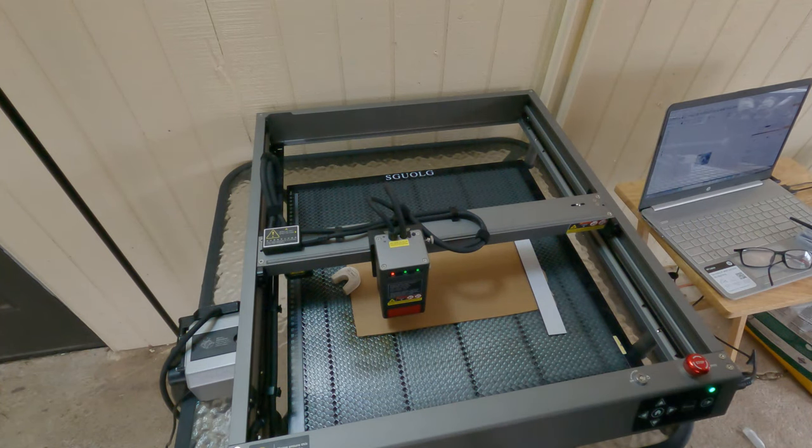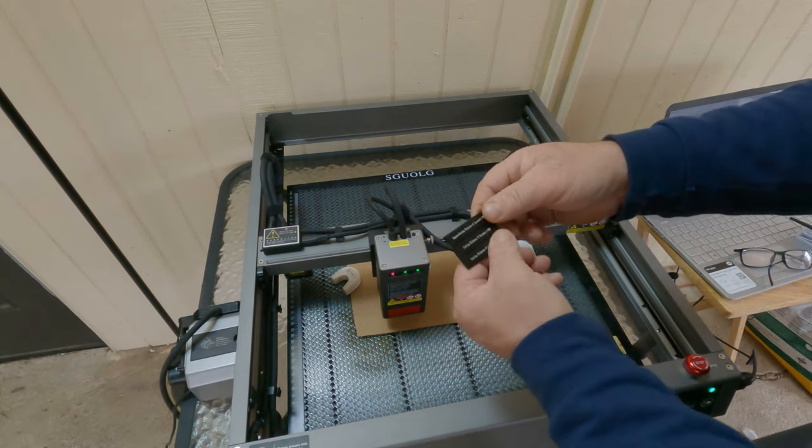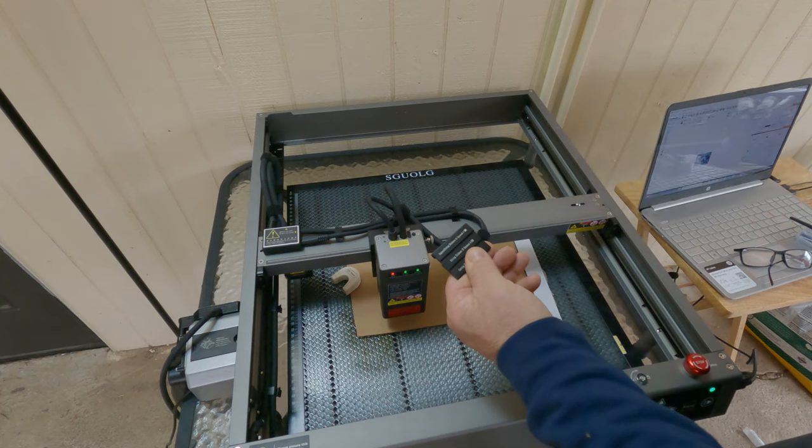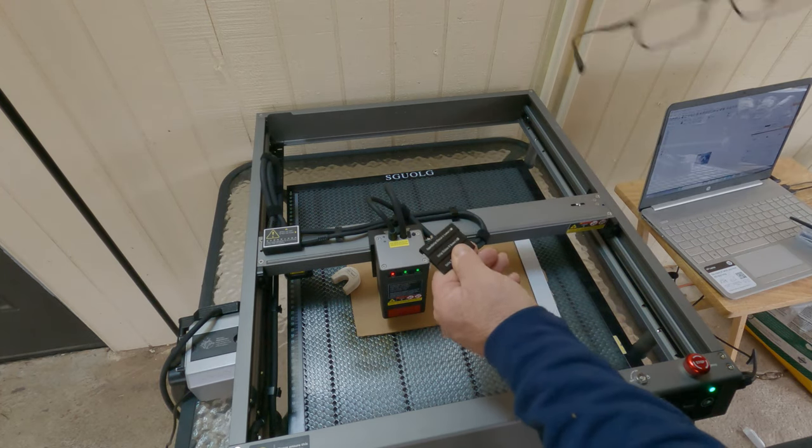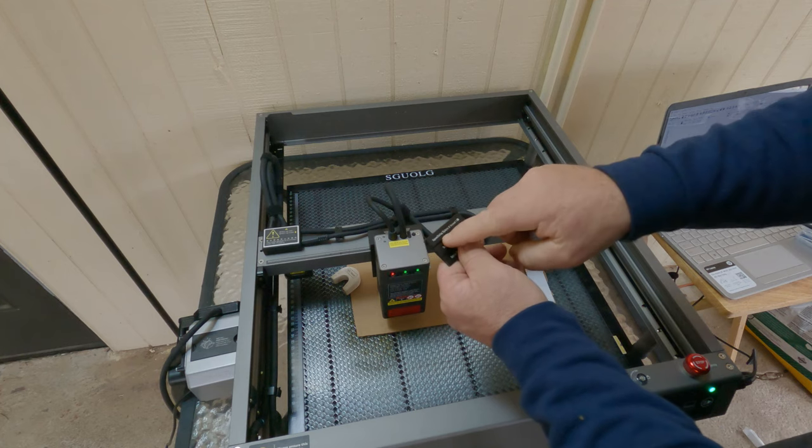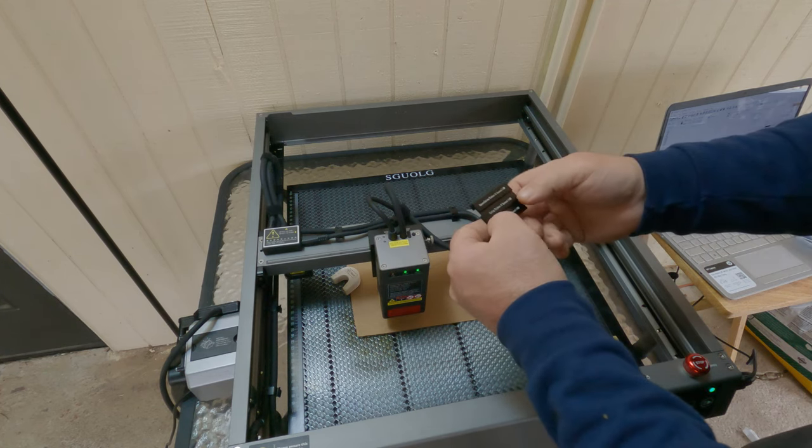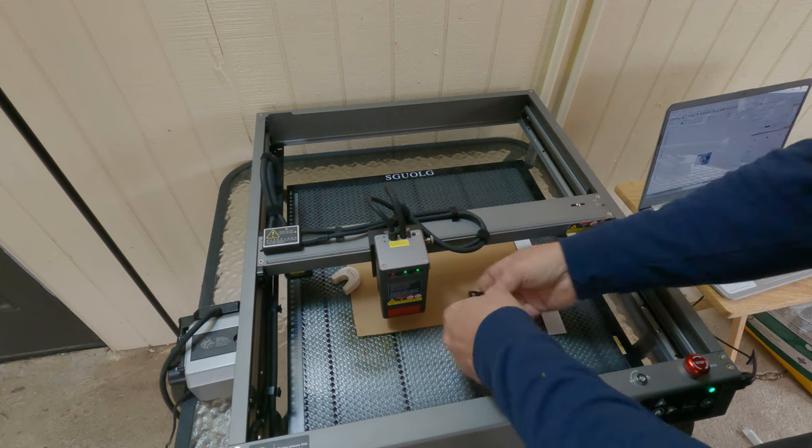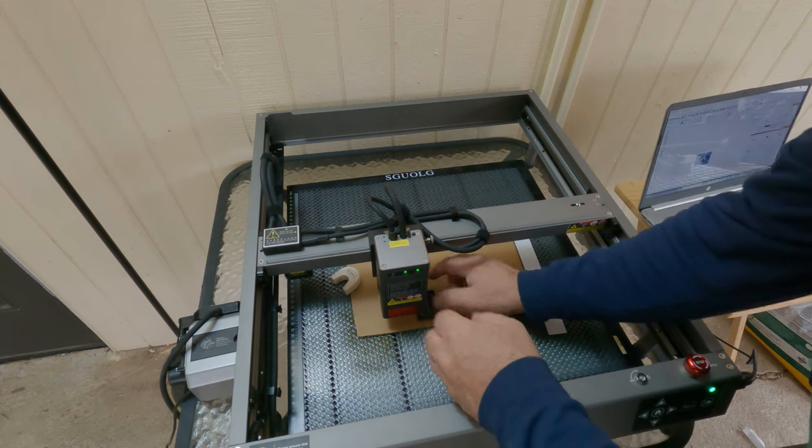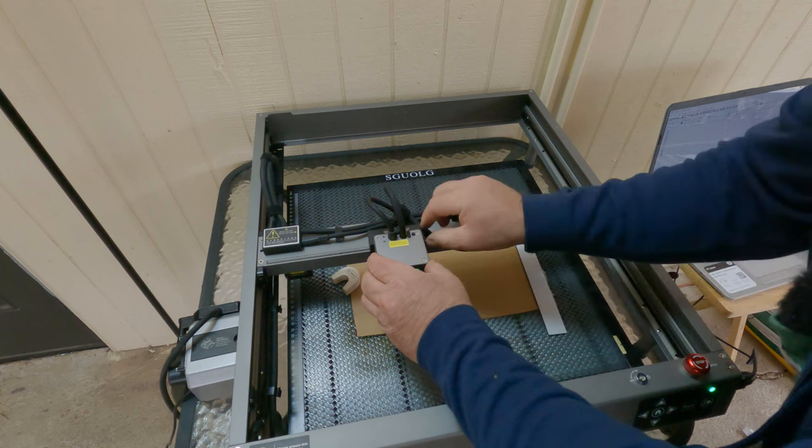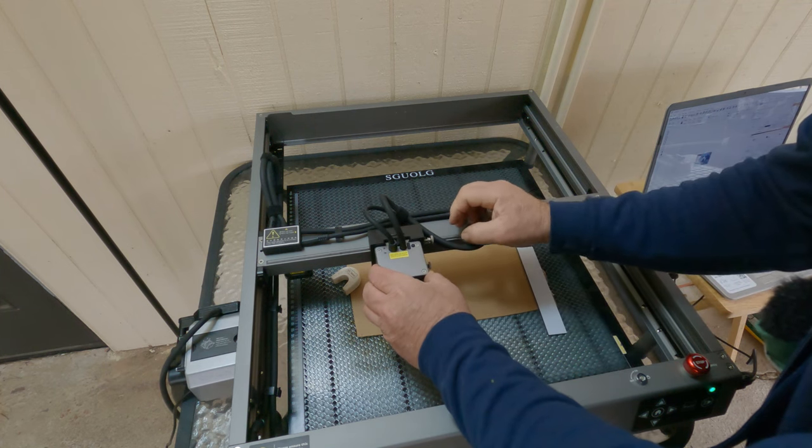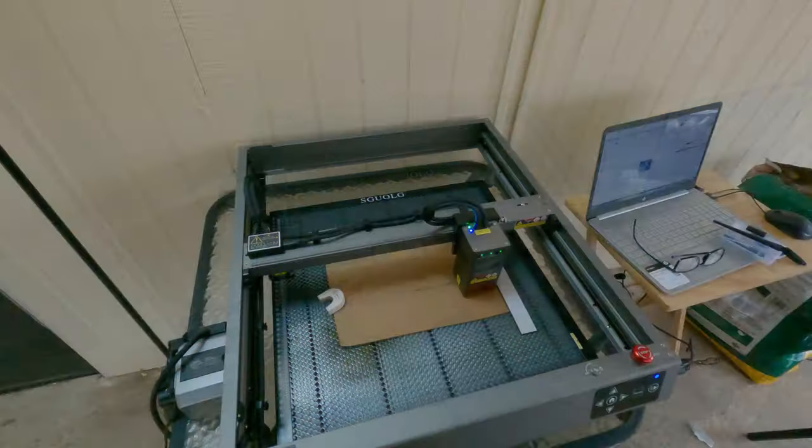Before we run any job, we want to take the gauge that they provide you. It says right there engrave and cutting thickness of basswood. We're using cardboard, so I'm just going to go ahead and do with what they were. You just take your thumb screws, loosen them, and you bring this down to the gauge, tighten them back up, and that's it.